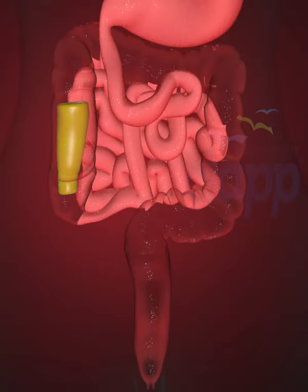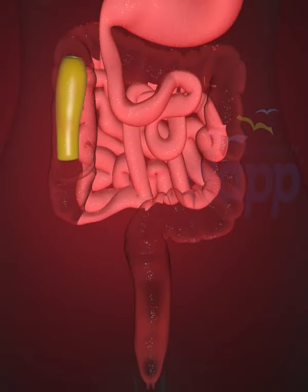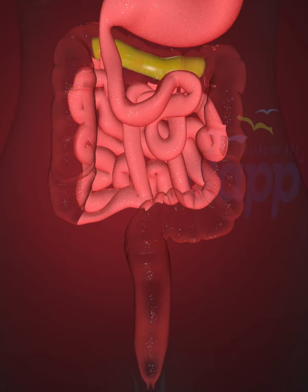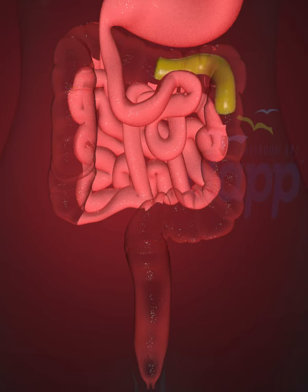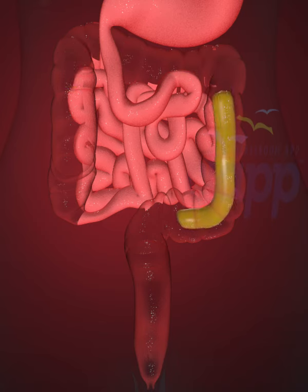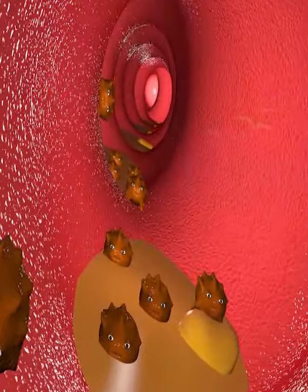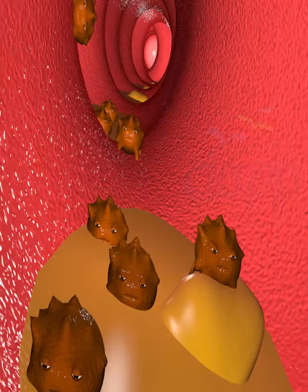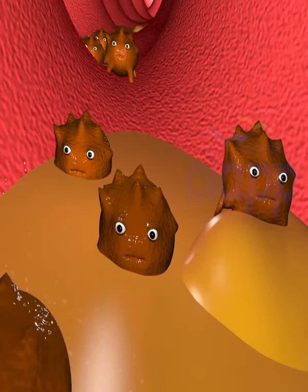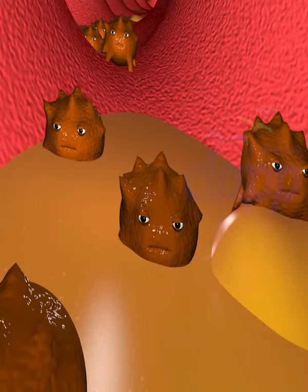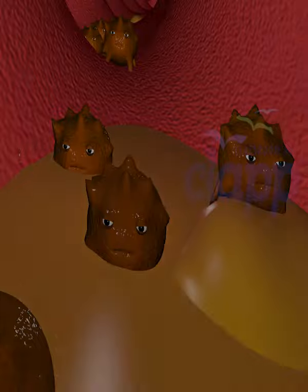As peristalsis continues, the waste products of the digestive process move into the large intestine. More water absorbs here. Bacteria in the large intestine help break down remaining nutrients and materials, and change the waste from liquid into stool.